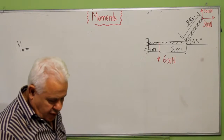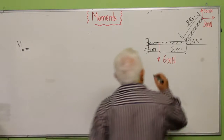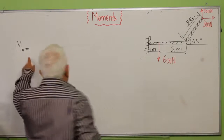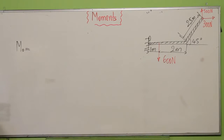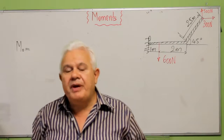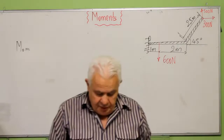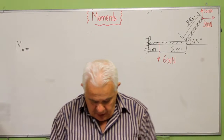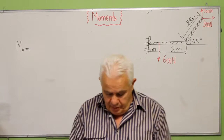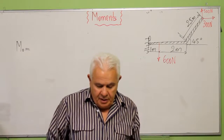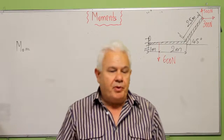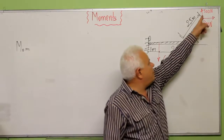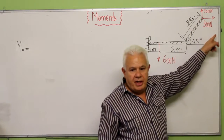What I am trying to calculate now is the moment of these three forces about O. The principle of moment states that the moment of a force about a point is equal to the sum of the moments of the forces about this point. So I have to calculate the moment of this force about O, plus the moment of this force about O, plus the moment of the 300 newtons about O.